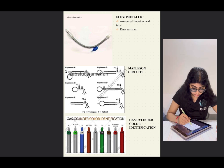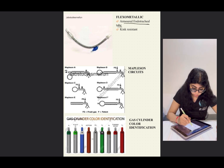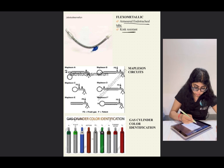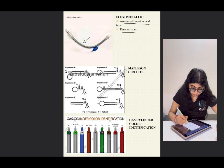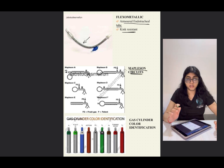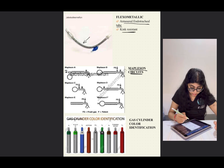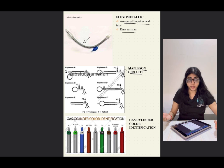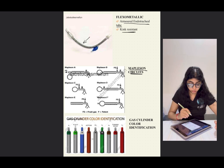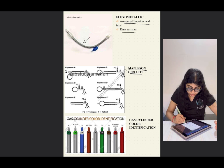The flexometallic endotracheal tube, also called the armored endotracheal tube, is kink-resistant because most of its composition is metal. Mapleson circuits are mostly not asked in recent exams, but you should know how each Mapleson circuit looks and be able to identify them.